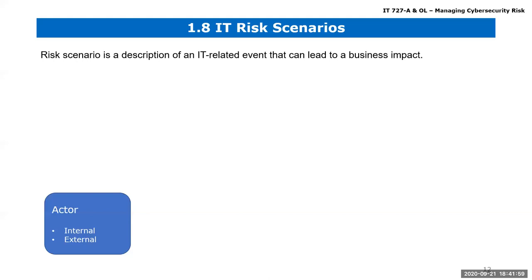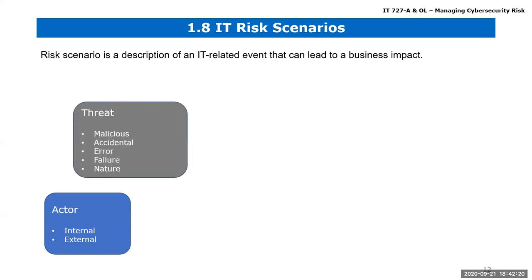Another reason for having scenarios is to help us foresee — if this were to happen, what would happen? If this catastrophe were to occur, how will it impact us? We always need actors — it could be internal or external. Threats can be malicious, accidental, due to negligence, errors, or failures — all are still threats even if unintentional.